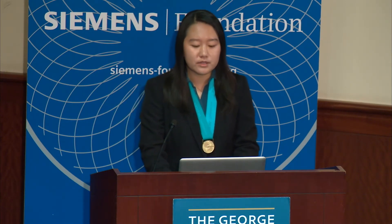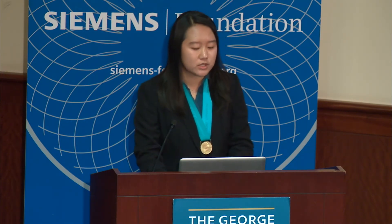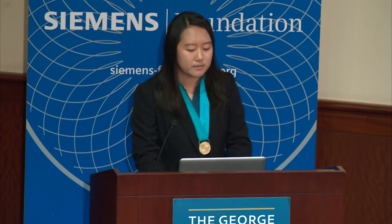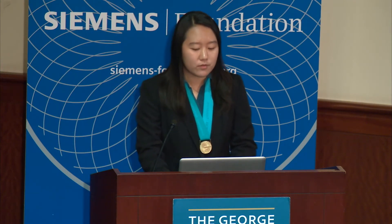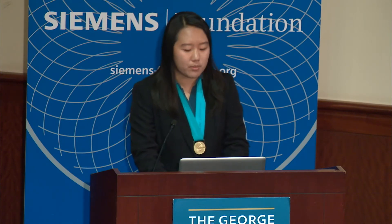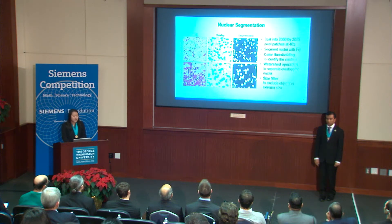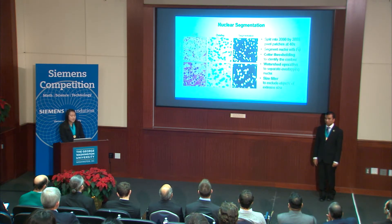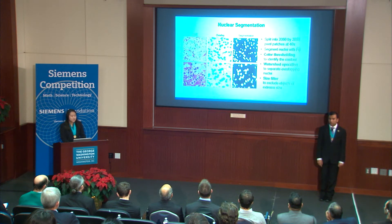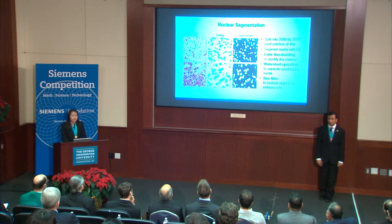For the nuclear segmentation, all the regions of interest were split into smaller image patches. Then we performed color thresholding to identify the nuclei contours and the watershed operation to separate overlapping nuclei. Finally, we applied a size filter to exclude objects of extreme size. As shown in the image in the rightmost column, this contains our segmentation mask, where the white areas were identified as cell nucleus and the black was background.